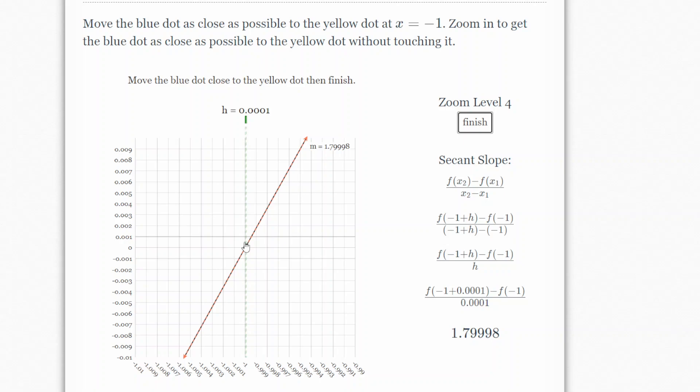So see how it fits this graph perfectly. This was something that was curved and now we're finding the slope of a line, a straight line, and getting a pretty good approximation. So hit finish.